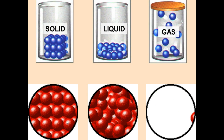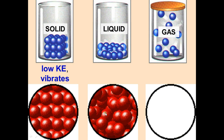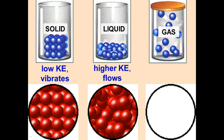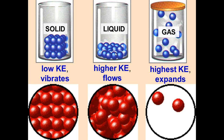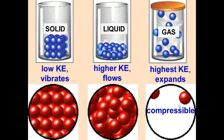Now we compare kinetic energy and spacing between solid, liquid, and gas. Solids have very low kinetic energy — they're still vibrating but not truly moving. Liquids are tightly packed but can flow around each other, with a little more kinetic energy. Gases have the highest kinetic energy and expand to fill the size of their container. Gases are also compressible — because they have so much space in the middle, we can crush them together and decrease that space while remaining a gas.